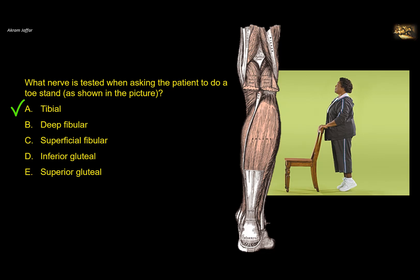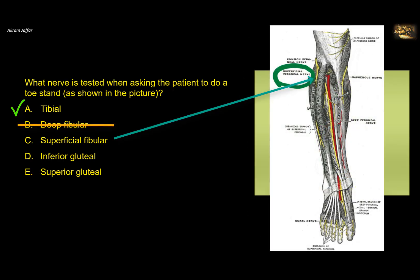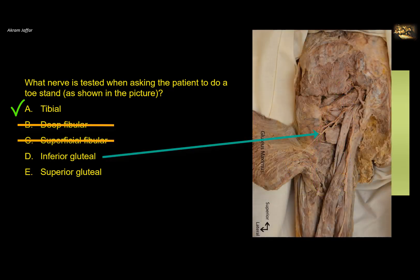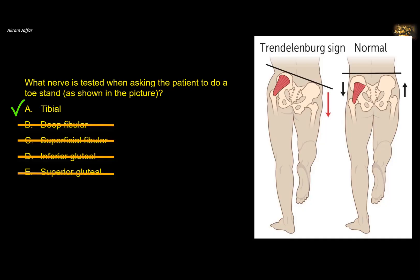The deep fibular nerve supplies the muscles of the anterior compartment, and we would ask the patient to dorsiflex the foot instead. The superficial peroneal supplies the lateral compartment, and we would ask the patient to evert the foot to test peroneus longus and brevis. The inferior gluteal nerve supplies gluteus maximus — a powerful extensor and lateral rotator of the hip. The superior gluteal nerve supplies gluteus medius, minimus, and tensor fasciae latae. It is tested by asking the patient to stand on one leg — if the hip dips on the contralateral side, this is Trendelenburg sign.